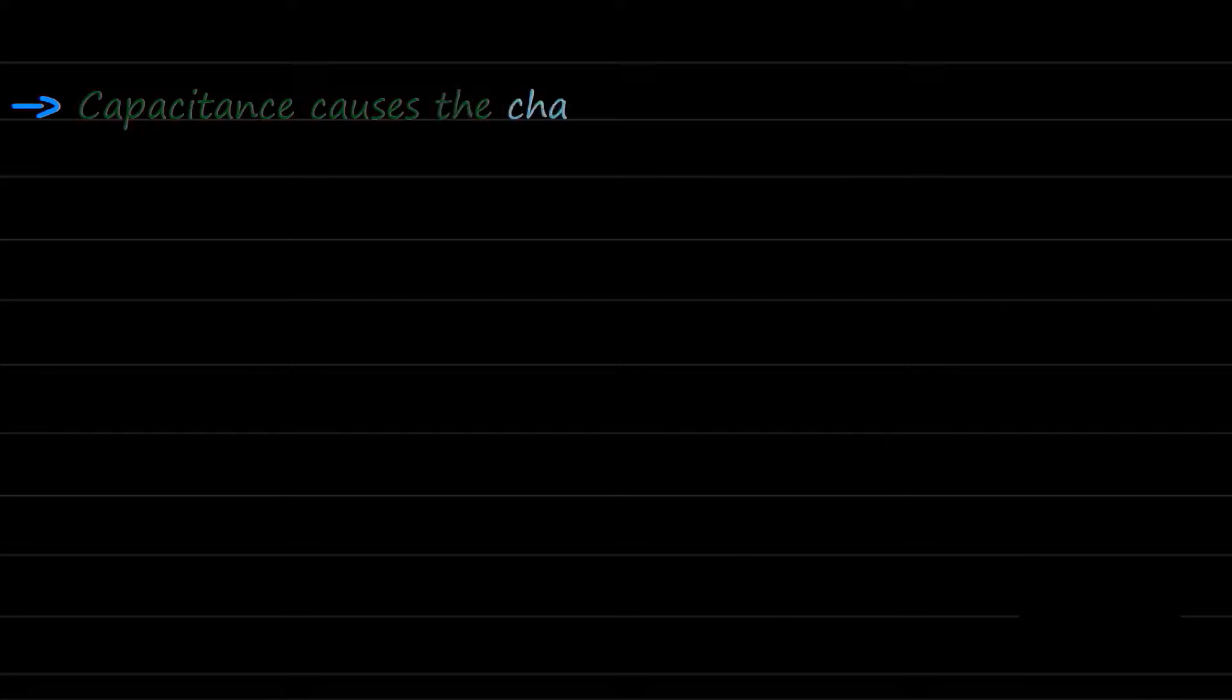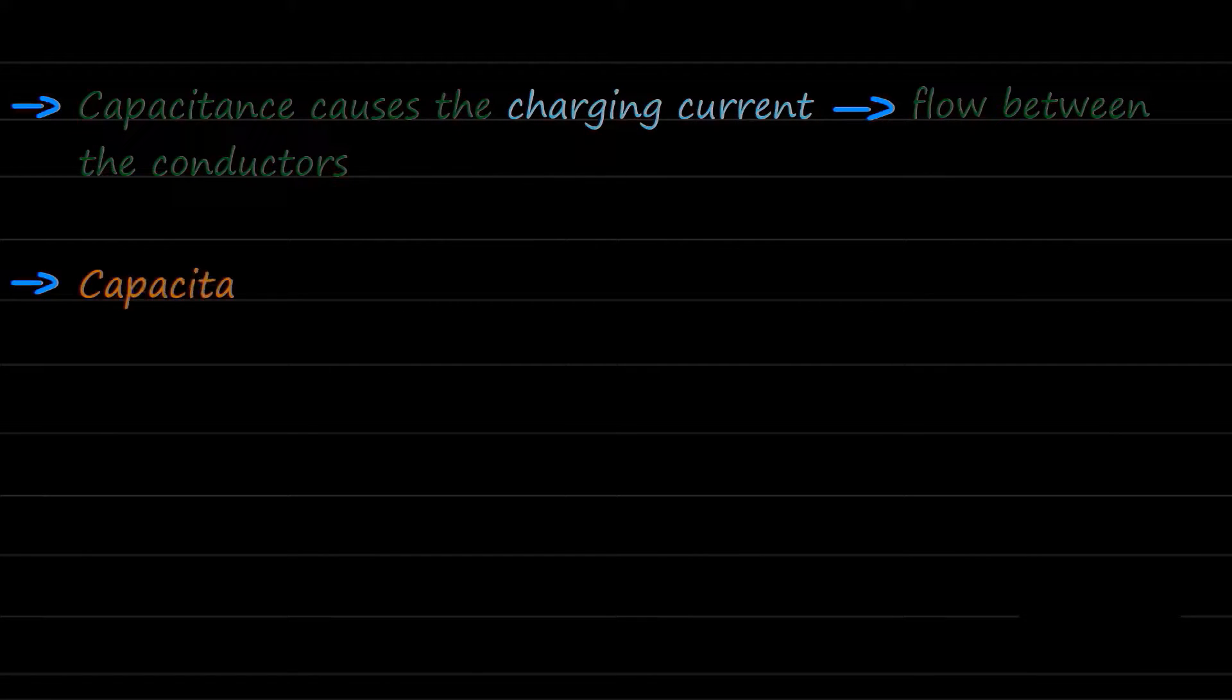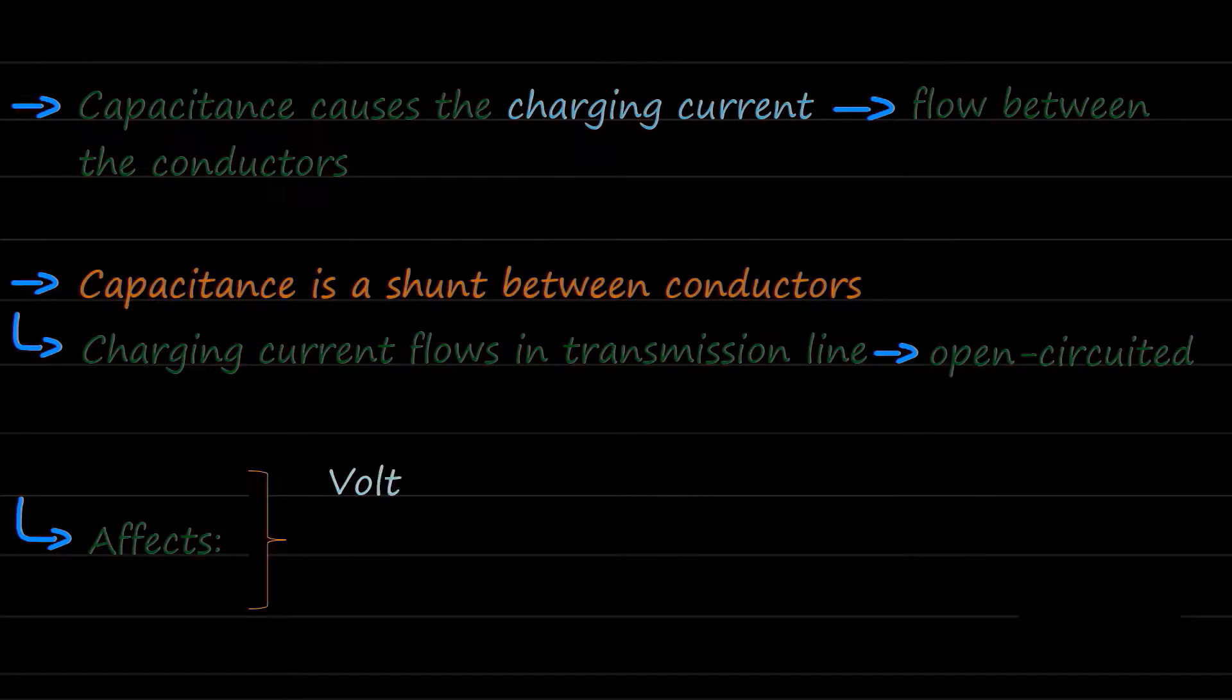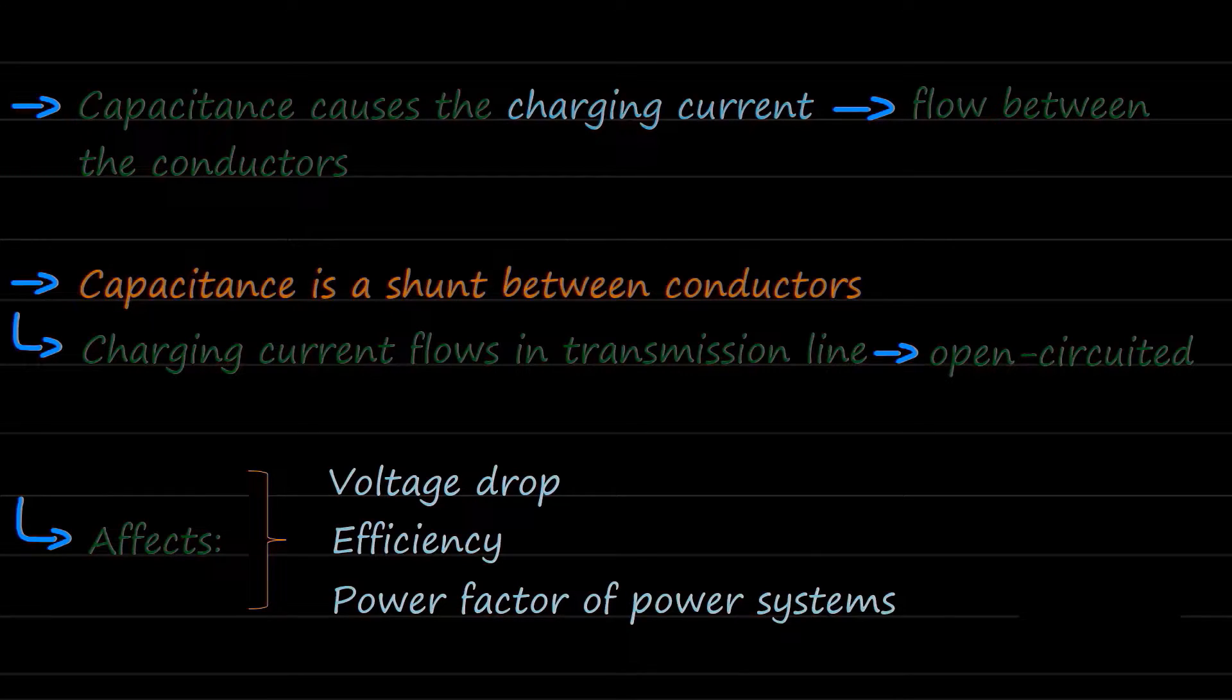Capacitance causes the charging current to flow between the conductors. And since capacitance is a shunt between conductors, charging current flows in a transmission line even when it is open circuited. Therefore, it affects the voltage drop, efficiency, and power factor of the power systems.